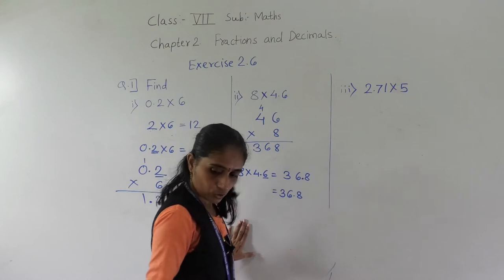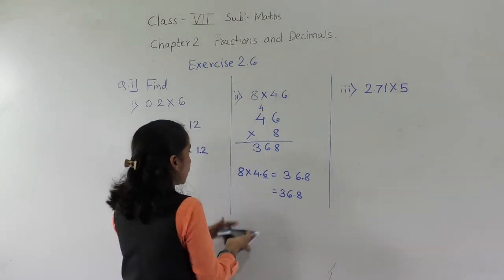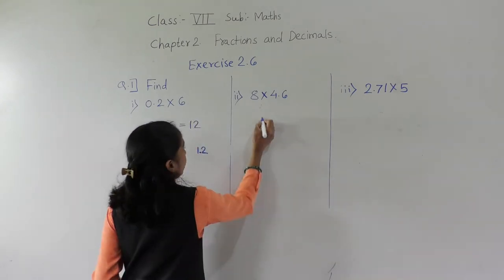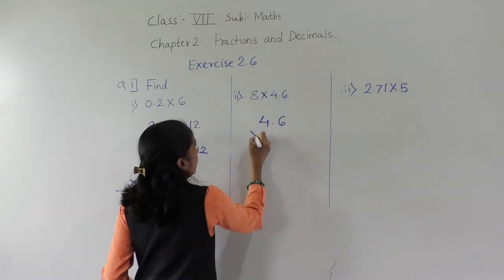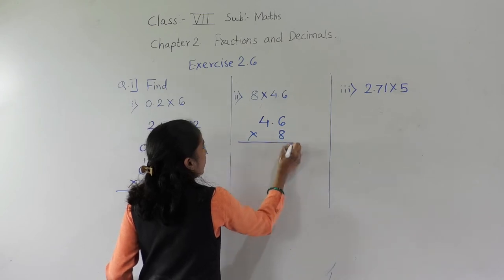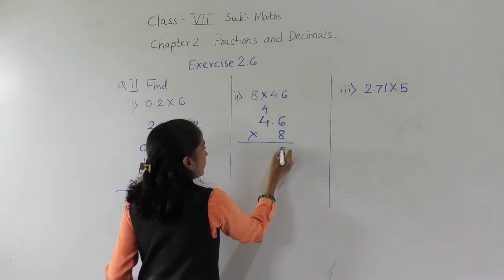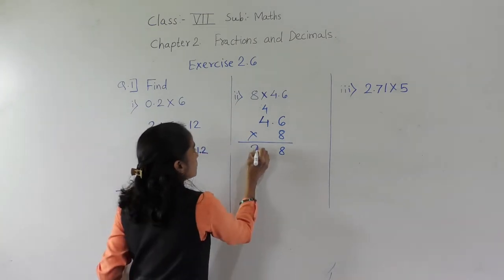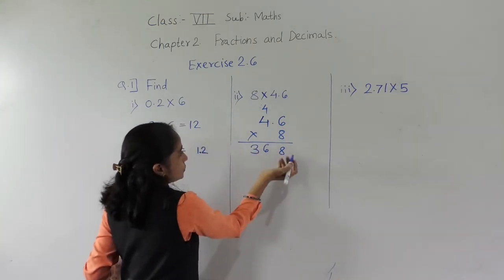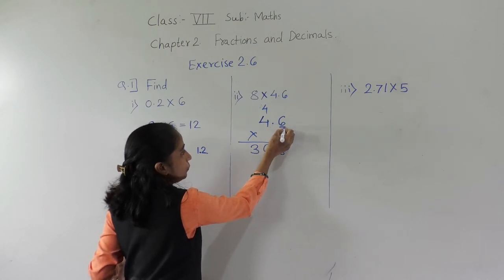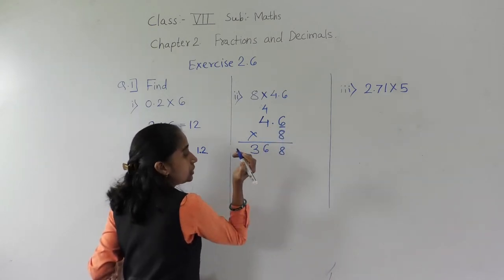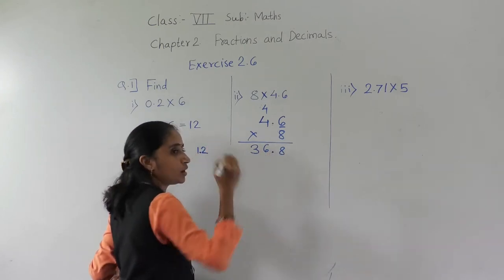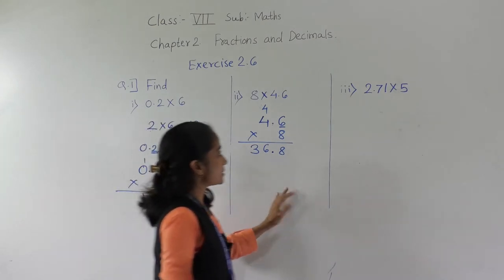Or else you can solve this sum this way also — give the decimal point and solve: multiplied by 8, 8 sixes are 48, 8 fours are 32, 32 plus 4 is 36. After the decimal point there is 1 digit, so before 1 digit give the decimal point. Next sum.